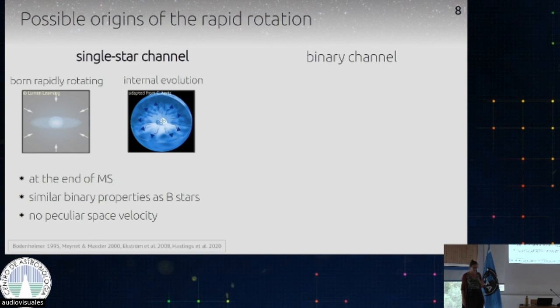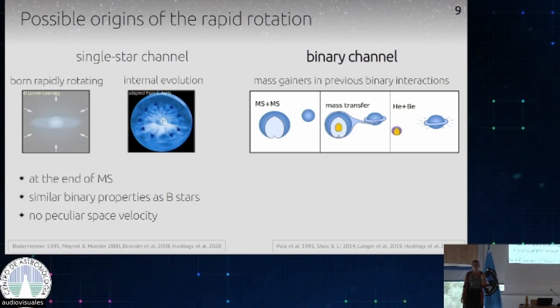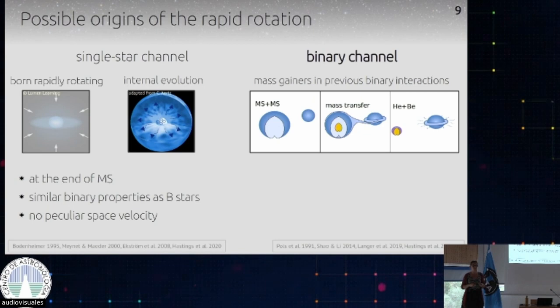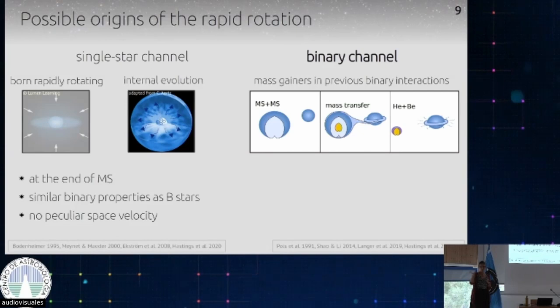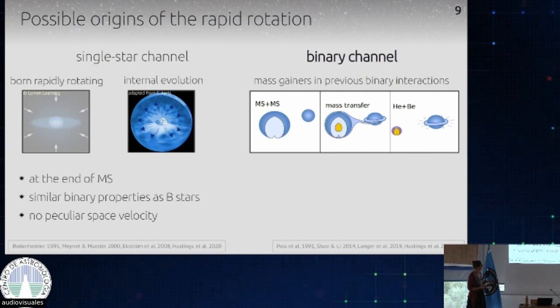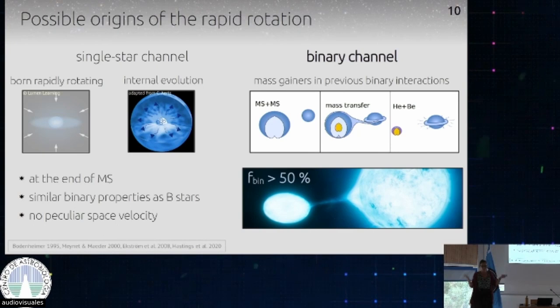Now let's look at the binary channel — which is basically what I had on my slide before. One possible way a binary system can interact: two main sequence stars, the primary evolves faster, fills its Roche lobe, goes into mass transfer, and transfers material to its companion. The companion, due to this mass transfer which also transfers angular momentum, is spun up and becomes a rapid rotator. The helium star is the leftover core of the previous primary that lost its envelope. A lot of stars are in binaries, so this seems like a viable channel.